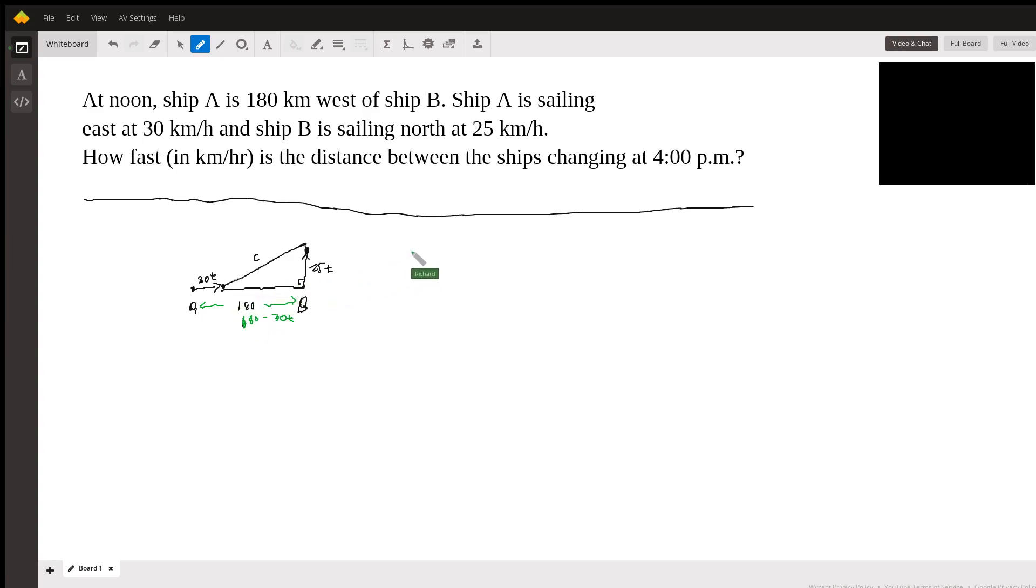So we know that this side, we're going to use Pythagorean theorem, so it's going to be (180 minus 30T) squared, plus this is B—it started here and it's moving north at 25T. And a squared plus b squared equals c squared, so I'm just going to write this with a square root over it.